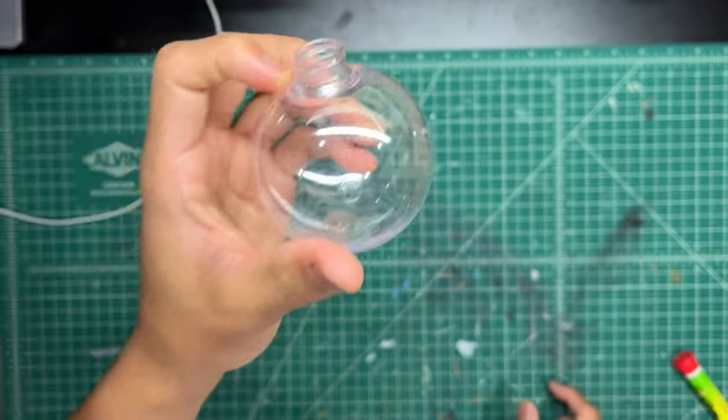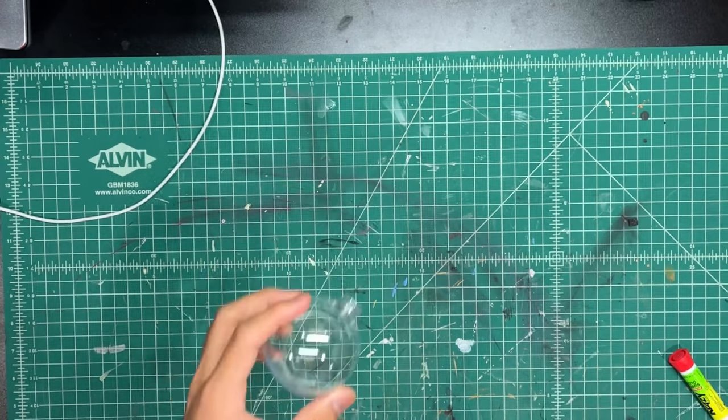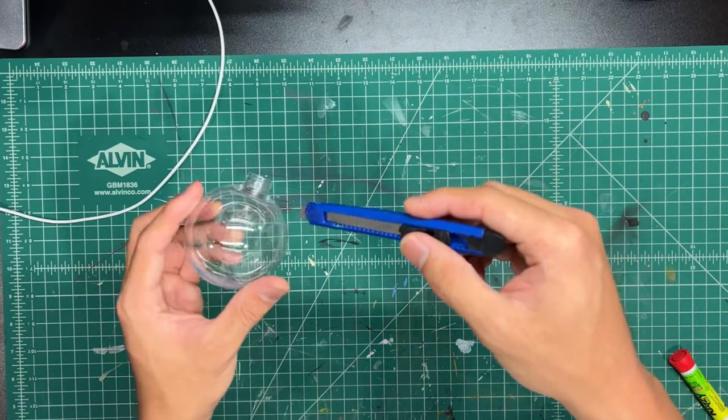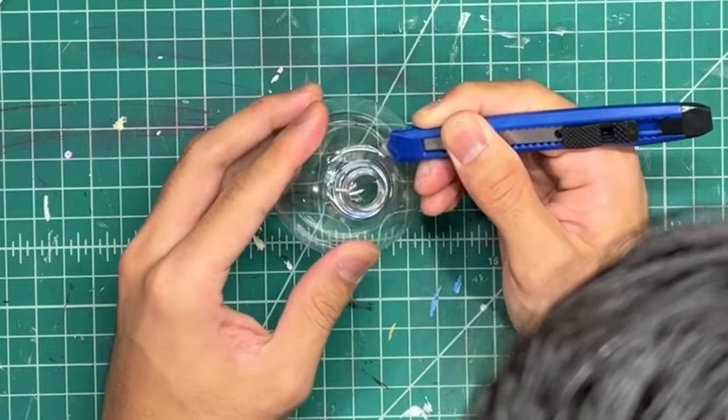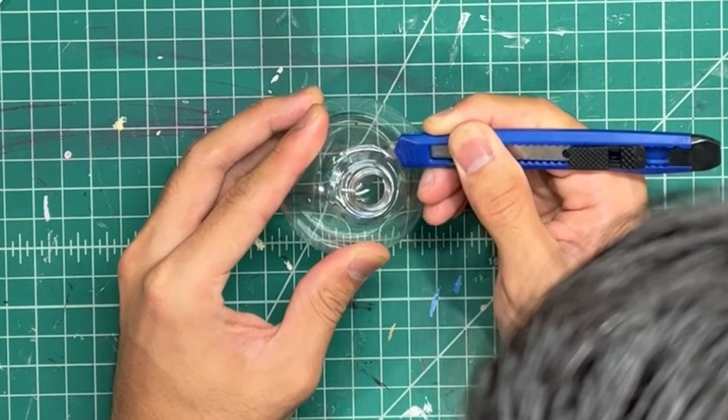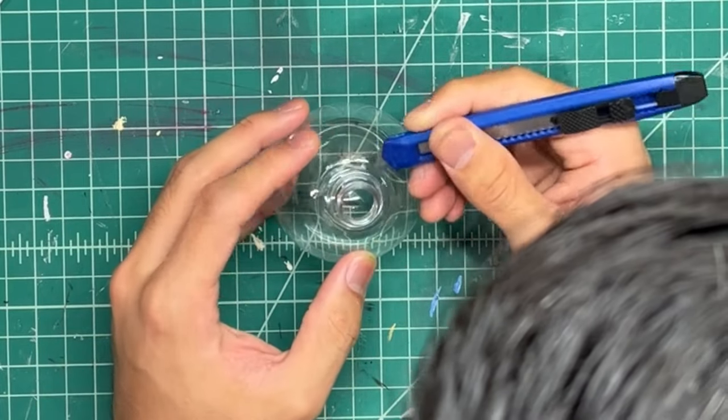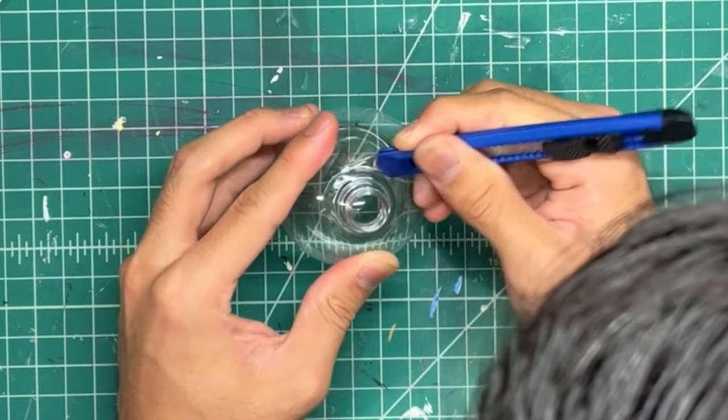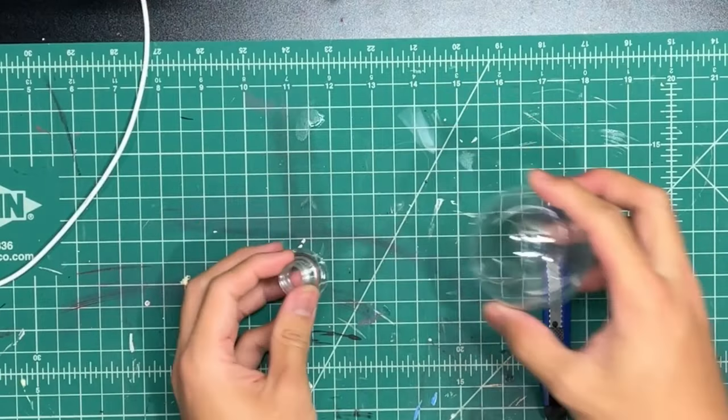I first start off by using this clear Christmas ornament. It's just made out of plastic—you can buy it at a store or online. The first thing you're going to want to do is cut out a hole at the top with a knife. You want to be sure to be very careful with this knife because, depending on how hard the plastic is, it can be kind of difficult to cut.